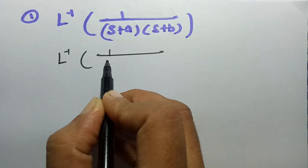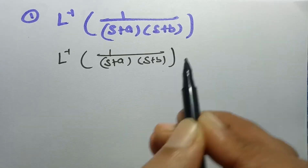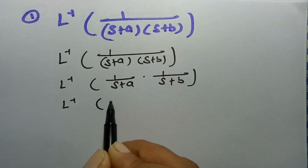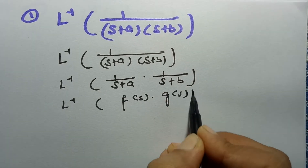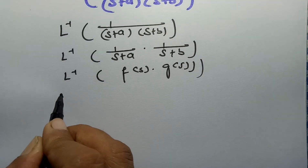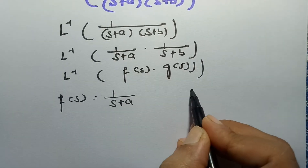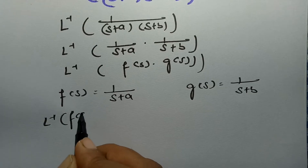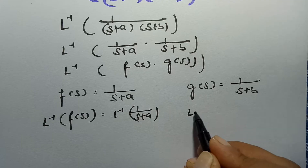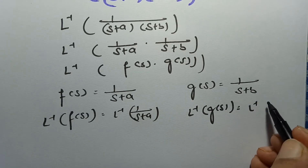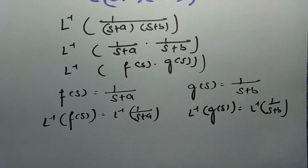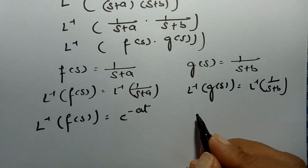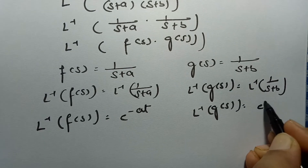The first problem: find the inverse Laplace transform of 1/[(s+a)(s+b)] using the convolution theorem. This is of the form F(s)·G(s), where F(s) = 1/(s+a) and G(s) = 1/(s+b). Applying inverse Laplace transform: the inverse Laplace transform of F(s) is e^(−at) and the inverse Laplace transform of G(s) is e^(−bt).